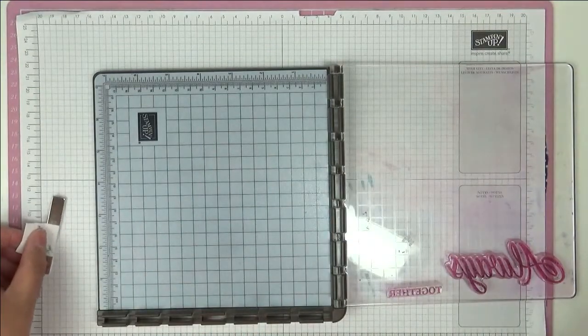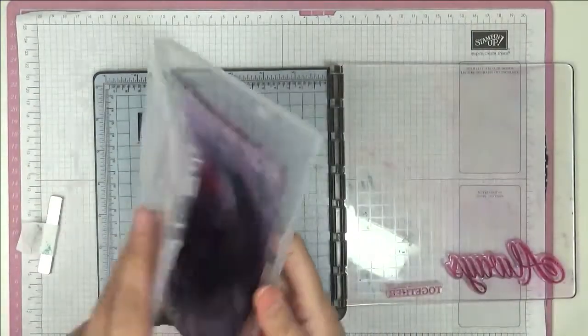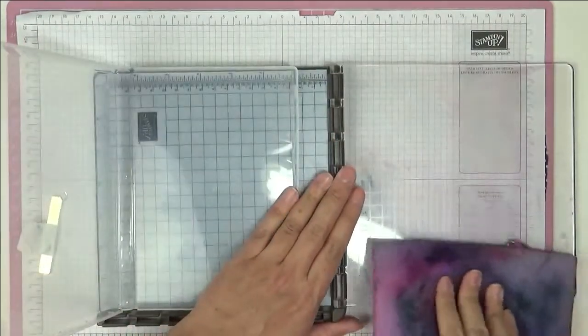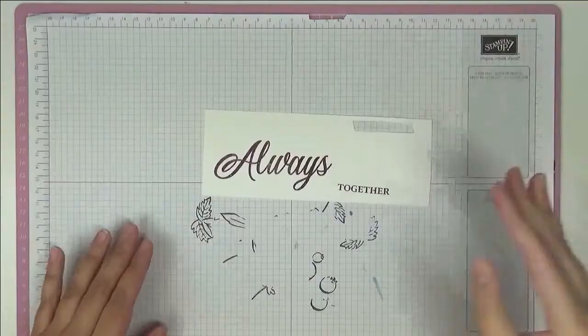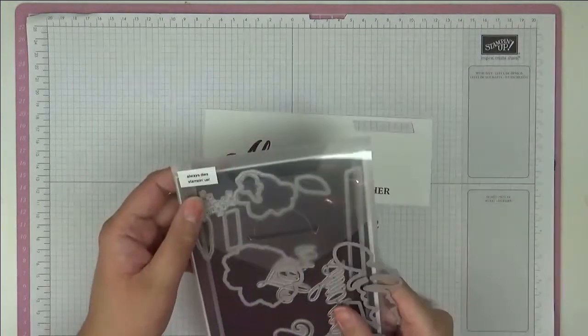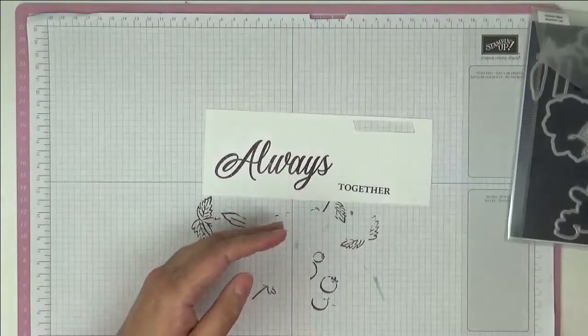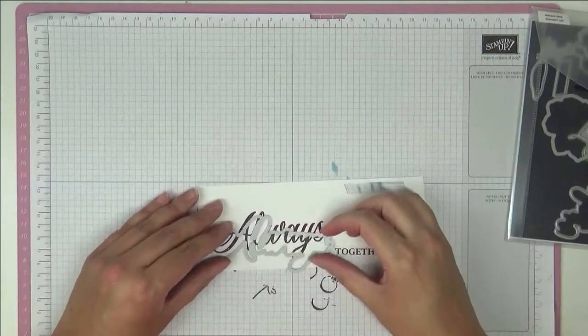Close up our ink pad, put this aside for a second to dry, bring in my simple shammy and we can give everything a really good cleanup. We're going to do some cutting now using the matching Always dies.